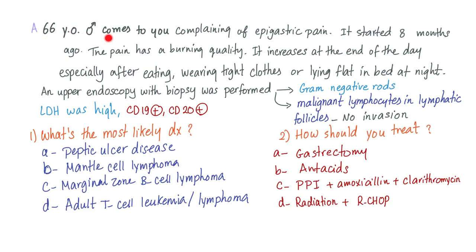Here is a case: a 66-year-old male presents with epigastric pain that started eight months ago. The pain has a burning quality, increases at the end of the day especially after meals, with tight clothes, or lying flat in bed at night. Upper endoscopy with biopsy was performed. The biopsy shows gram-negative rods in the stomach, as well as malignant lymphocytes in the lymphatic follicles with no invasion to other local structures. LDH was elevated. Immunohistochemistry shows CD19 positive and CD20 positive. Question one: what is the most likely diagnosis — peptic ulcer disease, mantle cell lymphoma, marginal zone B-cell lymphoma, or adult T-cell leukemia/lymphoma? Question two: how should you treat — gastrectomy, antacids, proton pump inhibitors plus amoxicillin plus clarithromycin, or radiation plus R-CHOP?